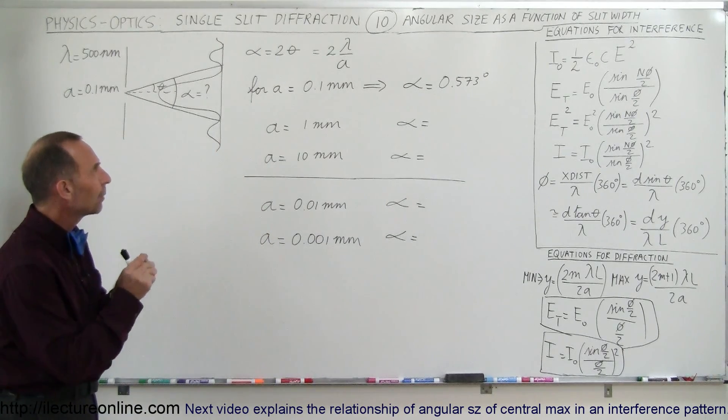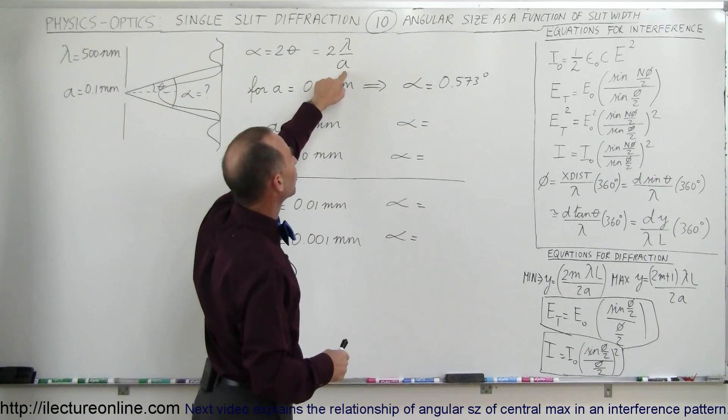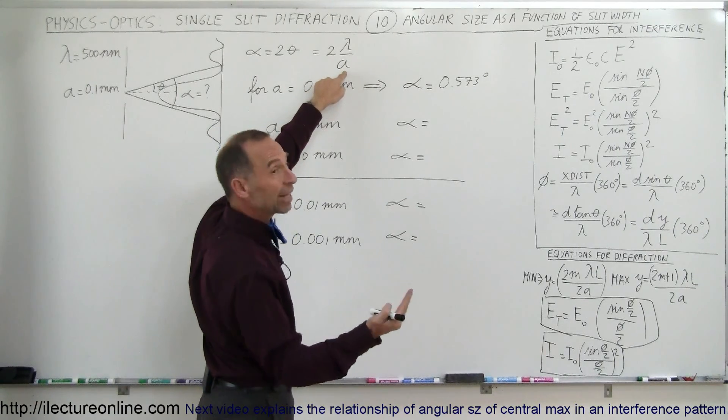Now, what happens when A becomes bigger? Well, when A becomes bigger, we divide by a bigger number in the denominator, that means we'll get a smaller number.